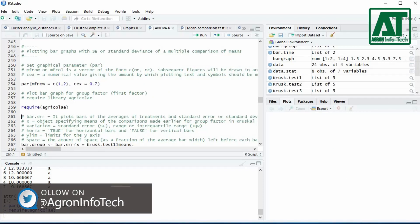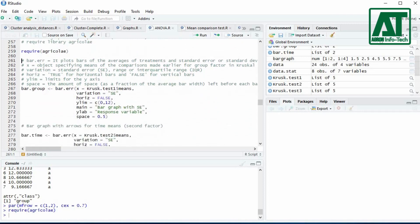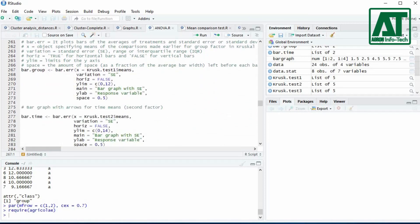Load library agricolae by using the require function. Create an object for group factor using bar.error function.